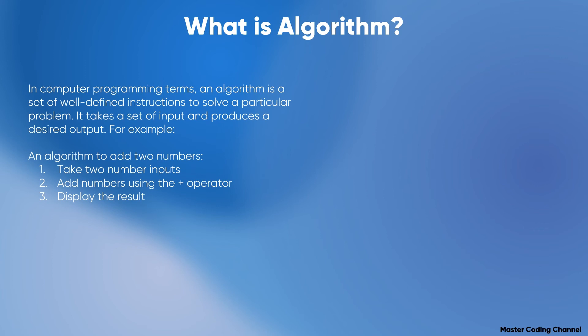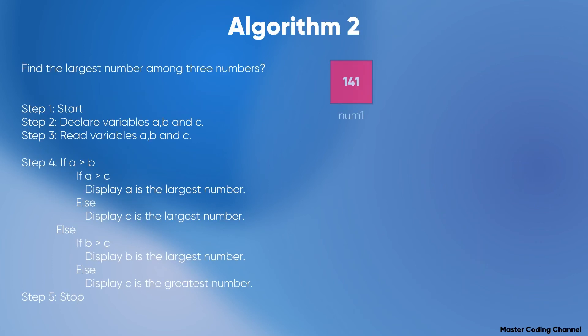For example, an algorithm to add two numbers: first, we take the first number — we ask the user for the first number they want to add, then the second number. We add the numbers using the plus operator, and then we display the result in a sum variable. So 4 plus 70 equals 74, the same as in the algorithm stated in coding.